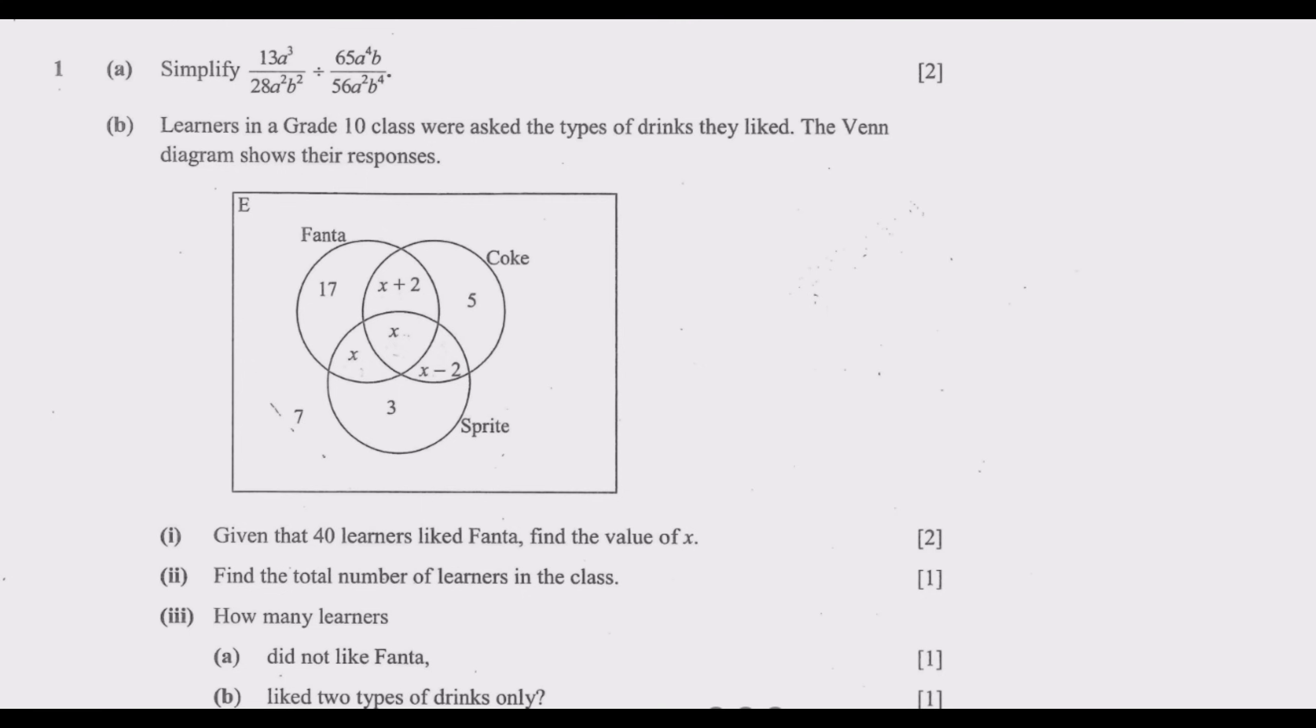Question 1a: simplify 13a³ over 28a²b² divided by 65a⁴b over 56a²b⁴. So let us start with a, and this is 2 marks.